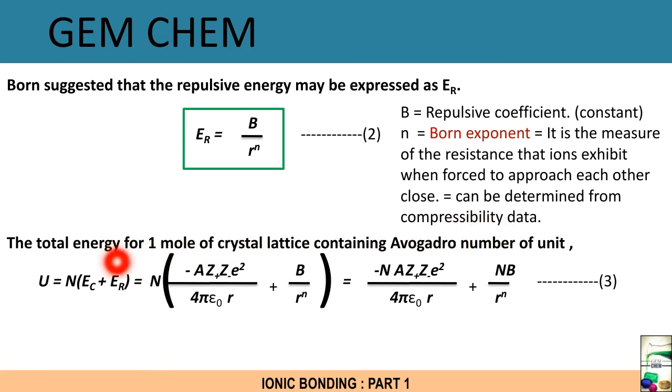Now the total energy for one mole of crystal lattice containing Avogadro number of units, basically we are getting the lattice energy, equals to Avogadro number multiplied by Ec, that is coulombic potential plus the repulsive potential. So we just substitute the value of 1 and 2 here and we get this kind of expression: U = N(Ec + Er) = N(-AZ+Z-e²/(4πε₀r) + B/rⁿ) = -NAZ+Z-e²/(4πε₀r) + NB/rⁿ. This expression is important.